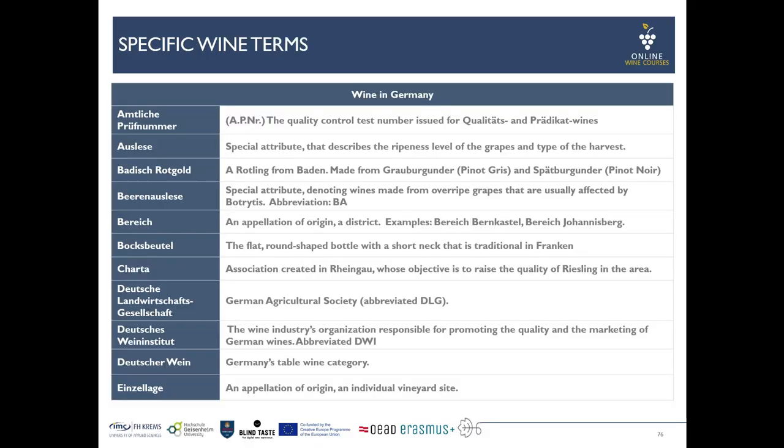Now we're coming to some specific wine terms, some of them we have already discovered, and I will pick some of them and explain them in a bit more detail. The AP number, or Amtliche Prüfnummer, which you find on each label either in the range of Qualitätswein or Prädikatswein, is indicating that the wine went through a sensory assessment in terms of quality but also in terms of typicity. Just by passing that evaluation, the wine can be marketed as such.